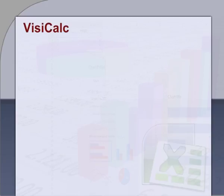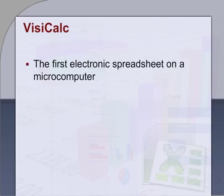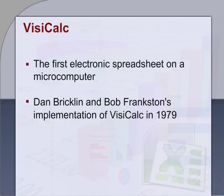Forward referencing or natural order calculation, used by a compiler, was the basis for functionality required for any spreadsheet to be practical and successful. Second, VisiCalc was the first electronic spreadsheet on a microcomputer, implemented by Dan Brecklin and Bob Frankston in 1979.